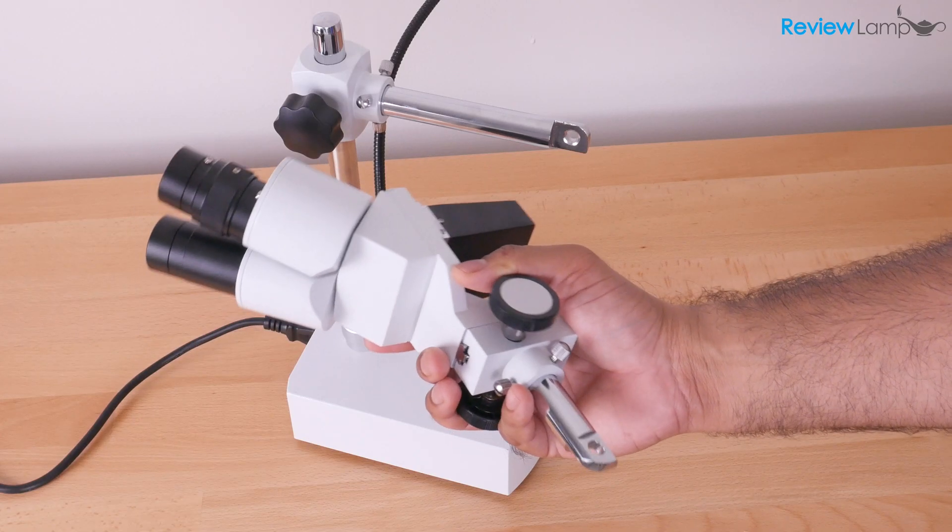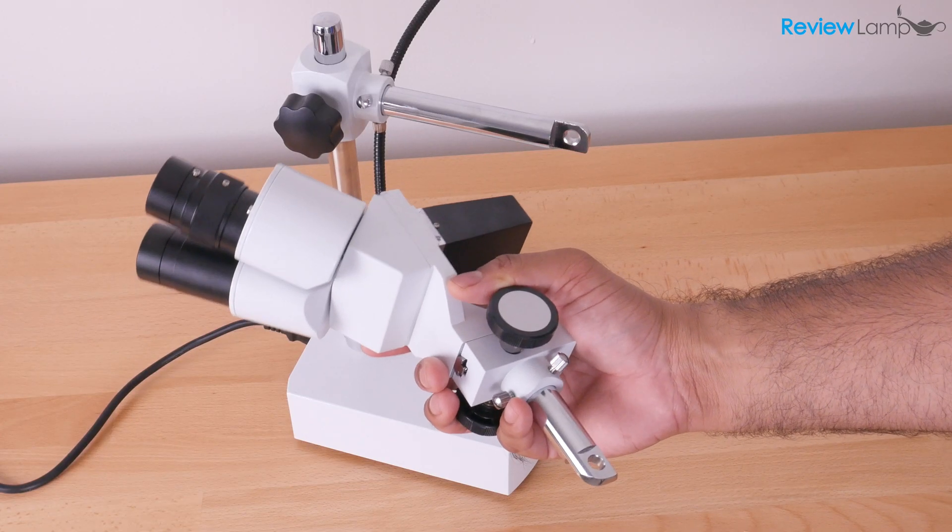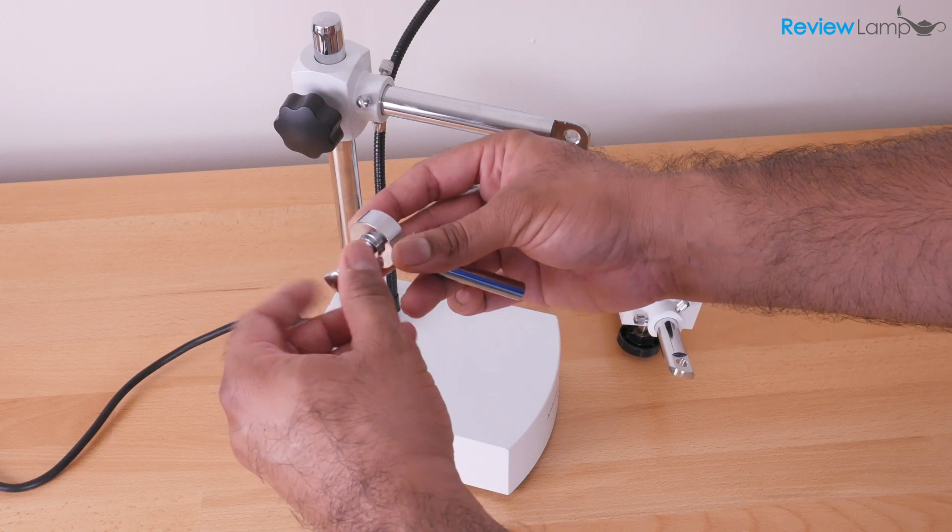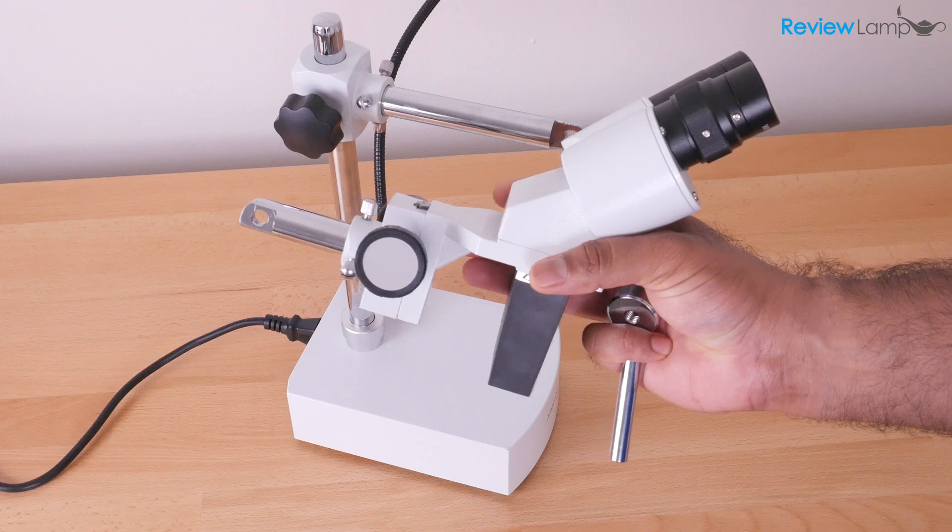In the next step, we're going to attach the microscope head to the stand. And to do this, we're going to unscrew the bolt that is screwed into the handle, separate those, and grab your microscope head.